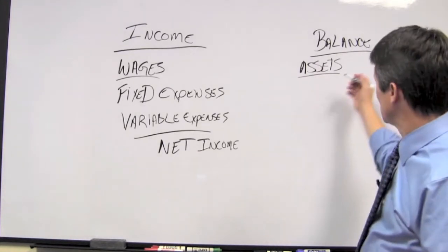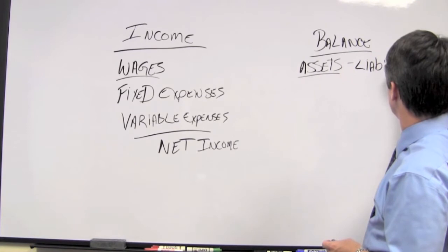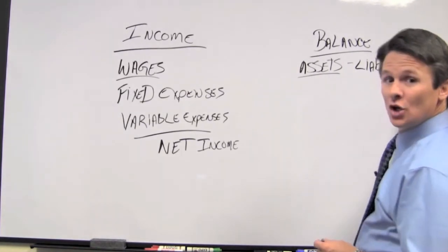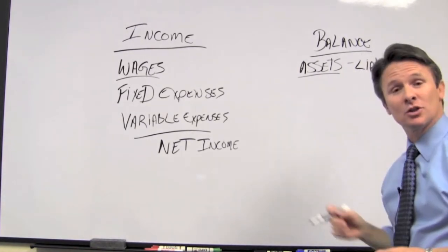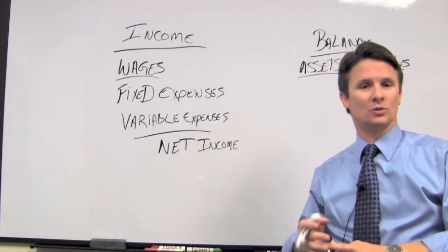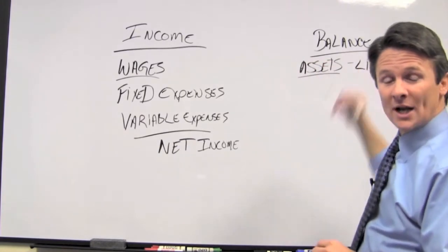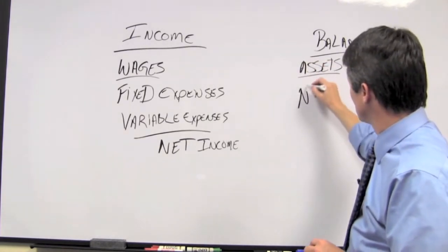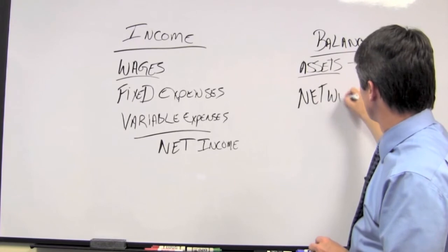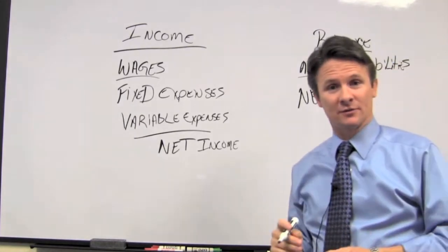On the other side of the balance sheet, you have your liabilities. Liabilities are things that you owe, like mortgages, car payments, student loans, things like that. If you take your assets, subtract your liabilities, you get, hopefully, a positive net worth.